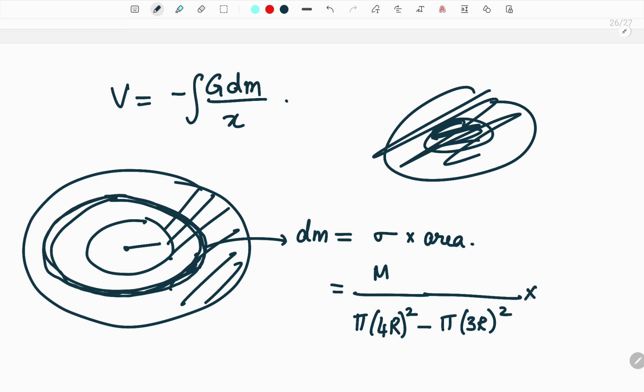So this is the surface density multiplied by area of this disc. What is the area of this disc? Now the length of this element is dr, the thickness of the element is dr and the circumference will be 2πr.